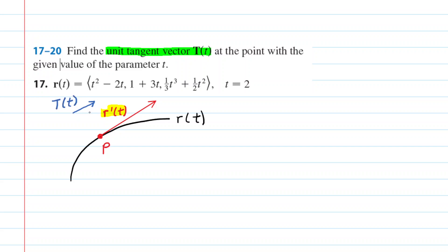And it's going to be pointing in the same direction as this red tangent vector. The only difference is that the unit tangent vector has a length of 1.